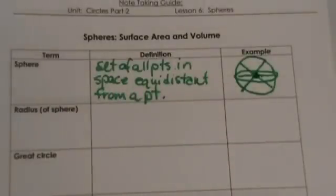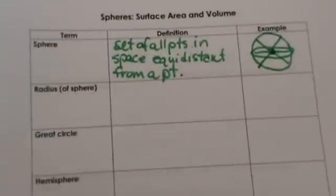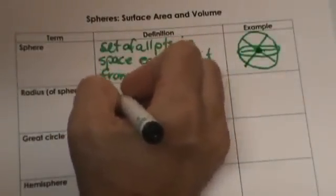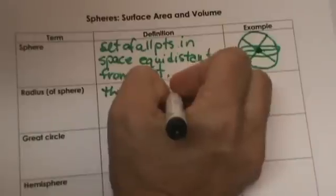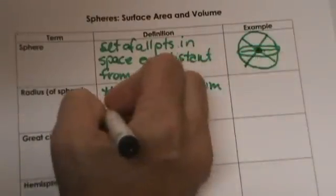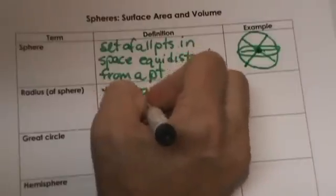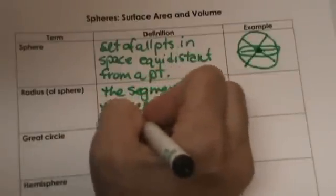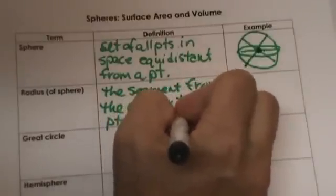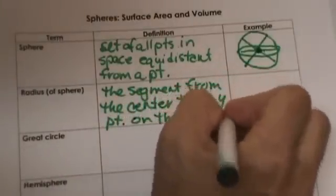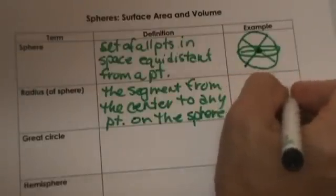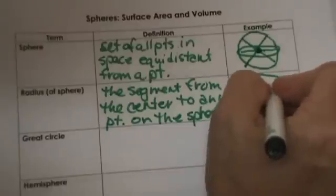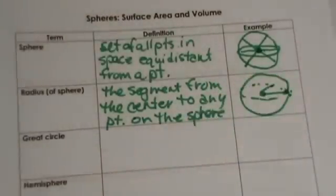So that's how I demonstrate my sphere in my classroom. What is the radius of a sphere? That's pretty easy. It is the segment from the center to any point on the sphere. We know that those are equidistant because from the center to any point on the sphere, it's just like the radius of a circle, but we have to think about it in three dimensions.